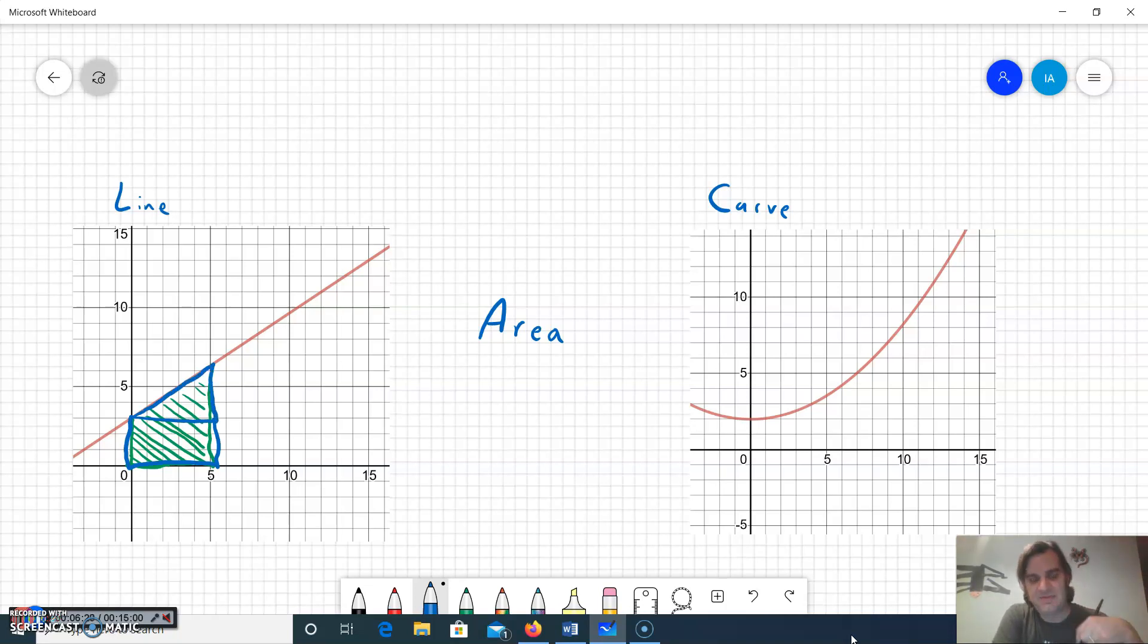So if I'm dealing with a straight line I can break it into geometric figures that I usually have formulas for. The area of a triangle is one-half base times height, and the area of a rectangle is length times width.